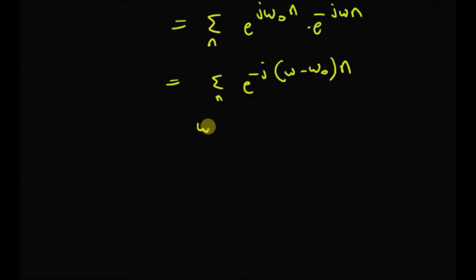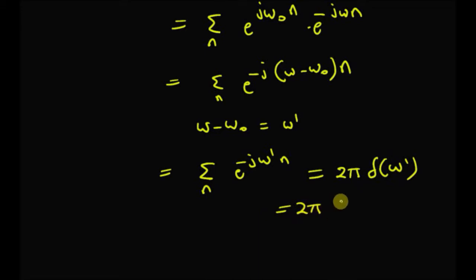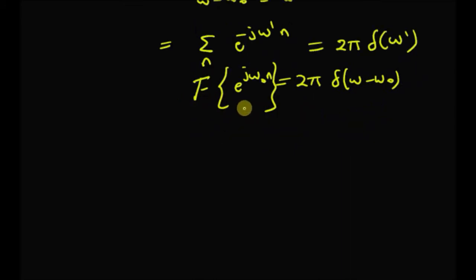By rewriting ω−ω₀ as a new frequency ω', the summation becomes the sum of e^(−jω'n), which is clearly the DTFT of a constant 1. This equals 2π·δ(ω'), which is of course 2π·δ(ω−ω₀). Therefore, the DTFT of e^(jω₀n) is equal to 2π·δ(ω−ω₀). That is, a complex exponential in the time domain is represented by an impulse in the frequency domain.